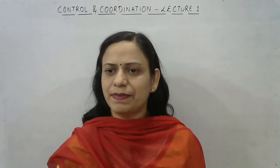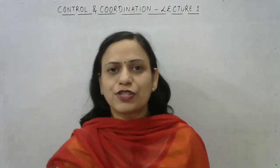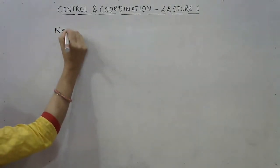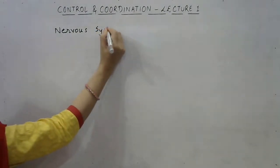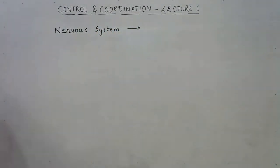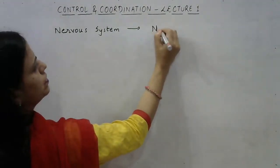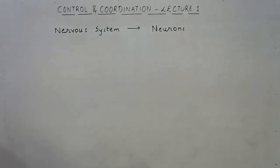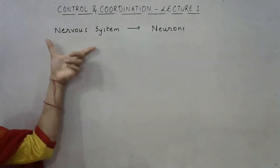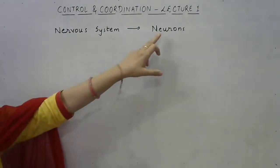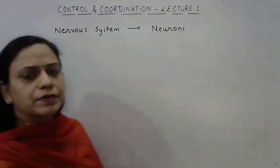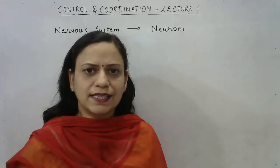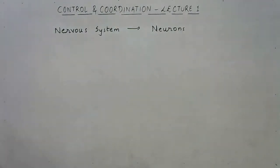The answer is neurons. The brain or the nervous system in our body is made up of specialized cells called neurons. Now that you are in Class 10, you need to learn technical terms. The technical name of the cells which constitute the nervous system is neuron — not 'nerve cell'. If asked for the basic structural unit of the nervous system, write 'neuron'.